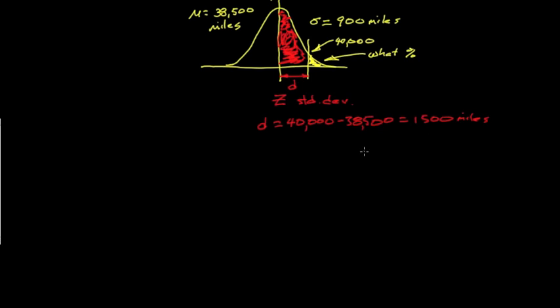To work with this Z table, we need to have this distance in standard deviation units. Well, Z, then, is nothing more than D in miles, divided by sigma, which is the conversion between the number of miles per standard deviation unit. So, that gives us the units of standard deviation, so that's what we need to do.